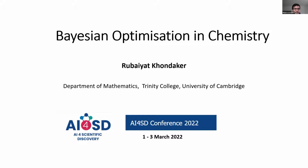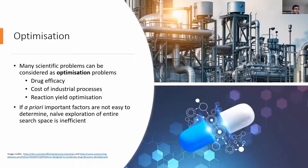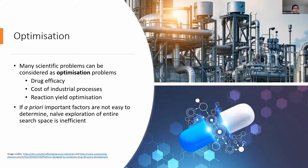Starting with general optimization: there are quite a few different scientific problems that can be considered optimization problems. For example, clinical trials trying to find a drug with the best efficacy while minimizing toxicity, or industrial processes optimizing cost in terms of materials or energy usage, or — as was mostly the case with my project — reaction yield optimization.